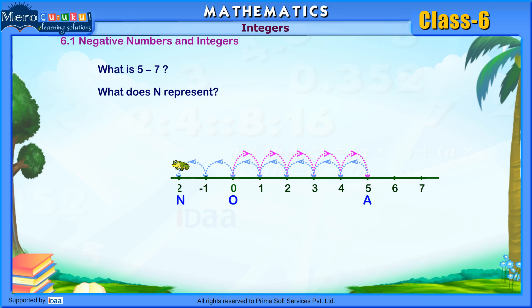we mark off equal distances to the left of O and label them as minus 1, minus 2, minus 3, minus 4, and so on in order. Thus, we find that N represents minus 2. Hence, 5 minus 7 is equal to minus 2.